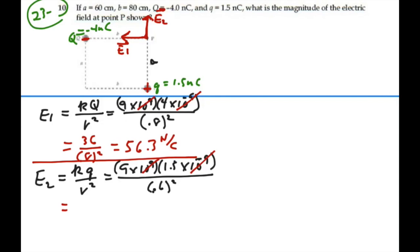And we'll have 13.5 over 0.6 squared. And what is that? 37.5 newtons per coulombs.